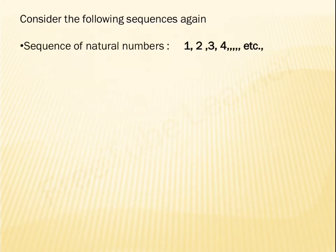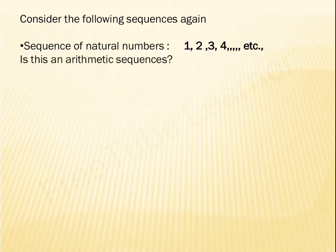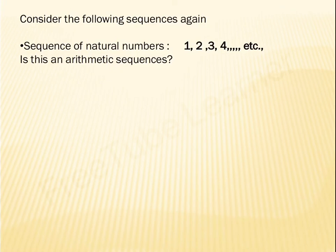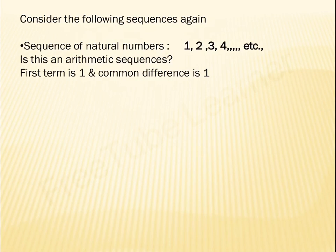Consider the sequence of natural numbers: 1, 2, 3, 4, etc. Is this an arithmetic sequence? The first term is 1. Let us find the common difference: 2 − 1 = 1, 3 − 2 = 1, 4 − 3 = 1. The difference between consecutive terms is always 1, so the common difference is 1. Hence, the sequence of natural numbers is an arithmetic sequence with first term 1 and common difference 1.